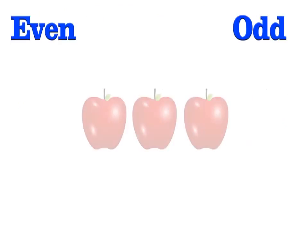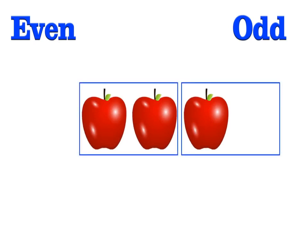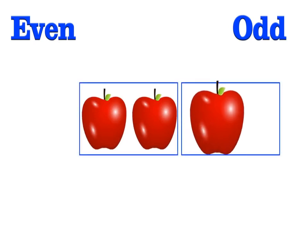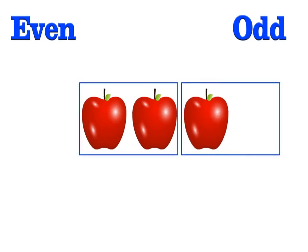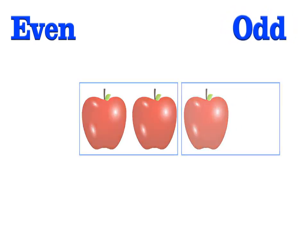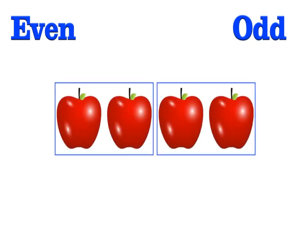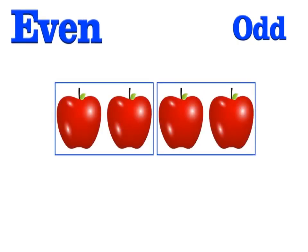One way you can see if a number is even or odd is to try grouping it into twos. If there is one left over, then it is an odd number. If there are no extra numbers, then it is even.